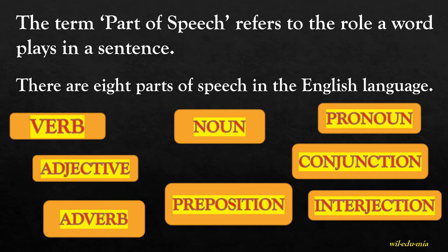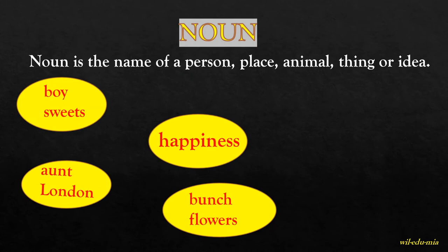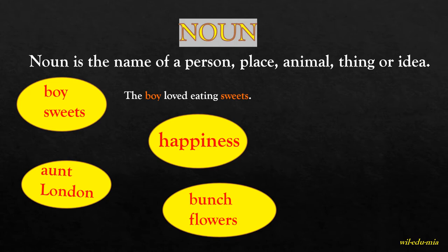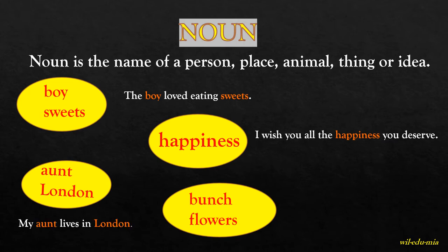Noun. A noun is the name of a person, place, animal, thing, or idea. Anything that has a name is a noun. For example, in the sentence 'The boy loved eating sweets,' boy and sweets are common nouns. 'I wish you all the happiness you deserve' — happiness is an abstract thing, so it's an abstract noun.